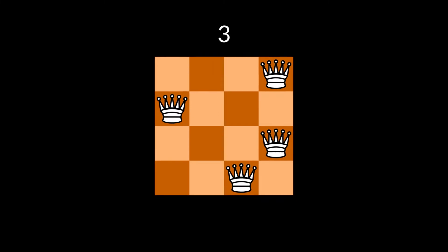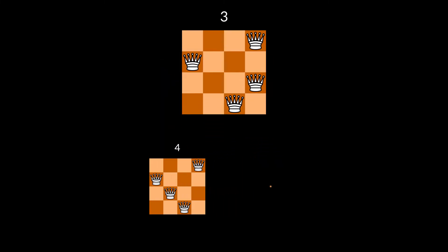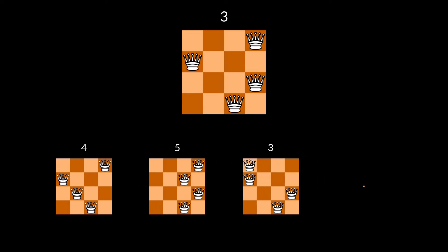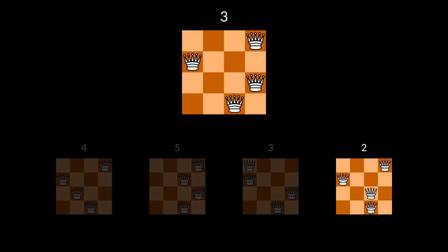There is one last trick I promised to show you in the beginning of this video. This trick is a change to the algorithm itself. Now we will try the moves in random order. And if a move results in a state with fewer conflicts, then we pick it immediately.